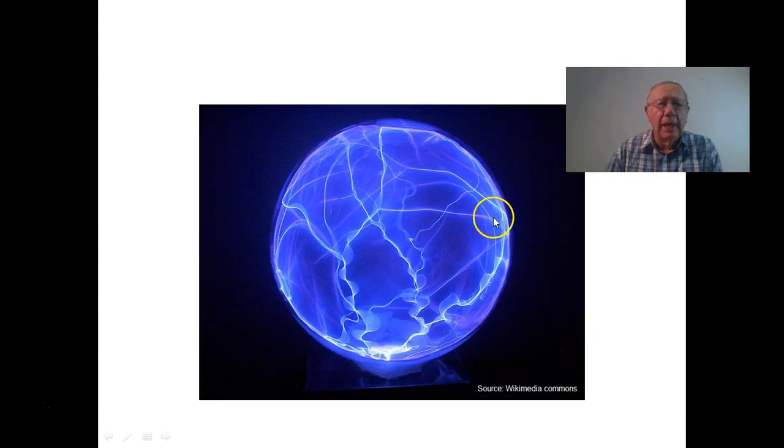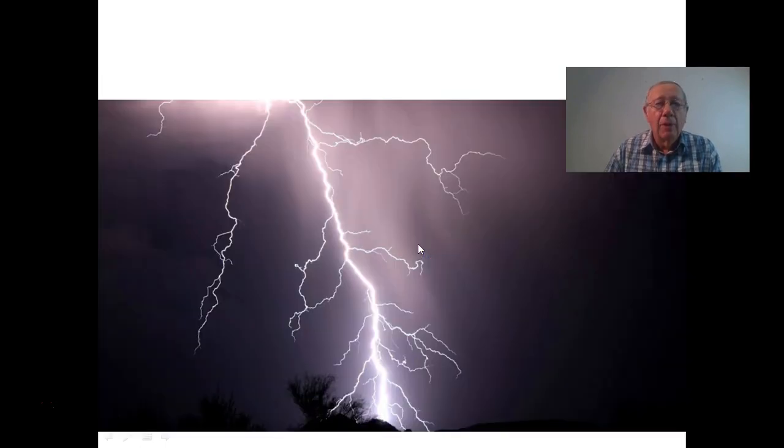We see this in plasma balls when we've got an electric current that runs through the gas. We also see plasma in situations like lightning. When there's electricity that's running through the air and we find that the nitrogen and the oxygen exist in a plasma state, a state where the electrons are separated from the rest of the atoms.